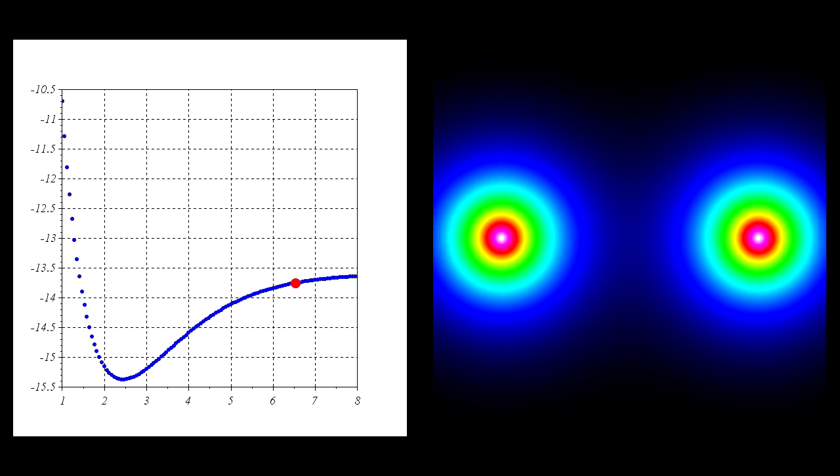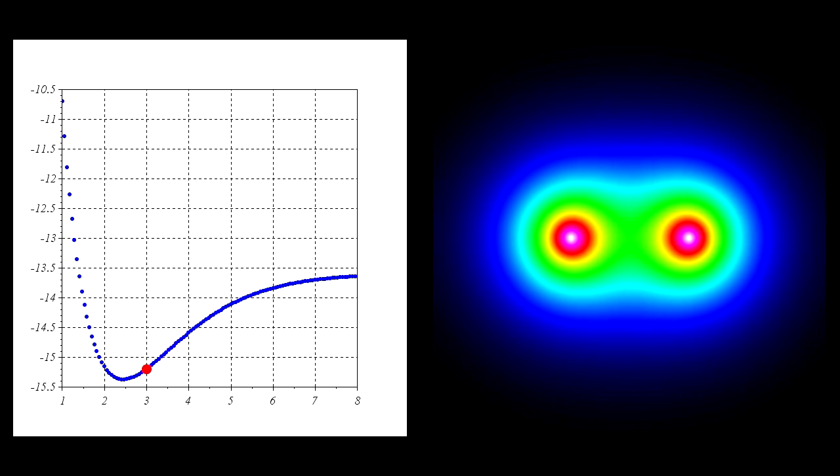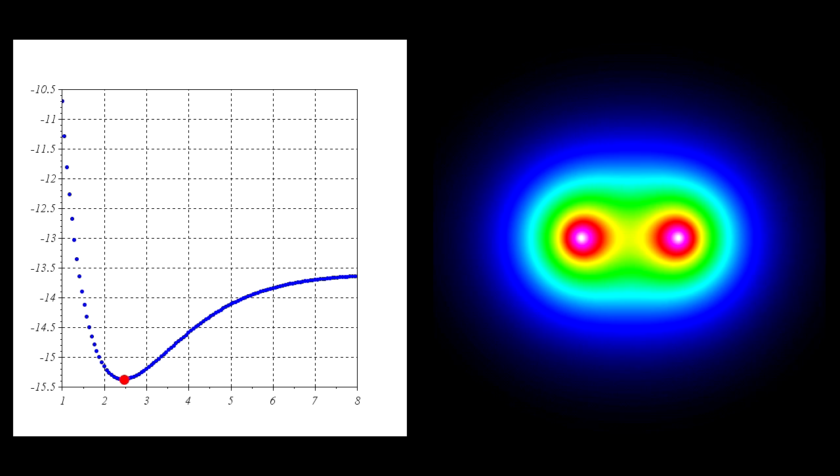As we move the protons closer, the energy decreases until we reach a minimum. After that, the proton-proton repulsion begins to dominate and the potential energy rapidly increases. At the minimum of the energy curve, the separation is about 2.5 Bohr radii and the energy is about minus 15.4 electron volts. The experimental values are 2 Bohr radii and minus 16.4 electron volts. So with this very simple model, we're able to predict the size and energy of the hydrogen molecule ion to within roughly 25% or so.